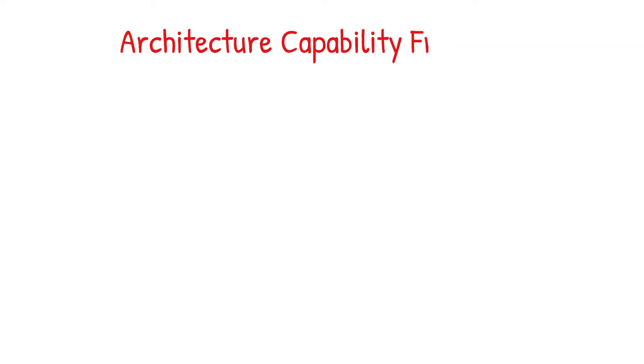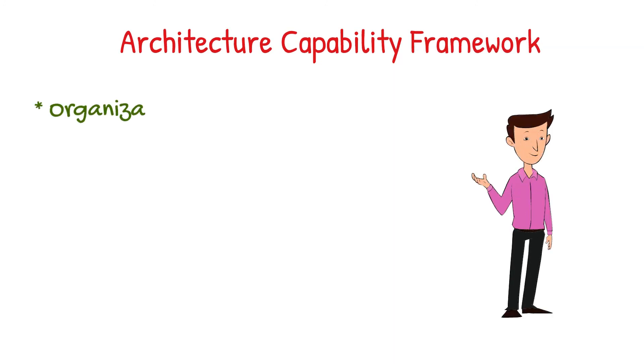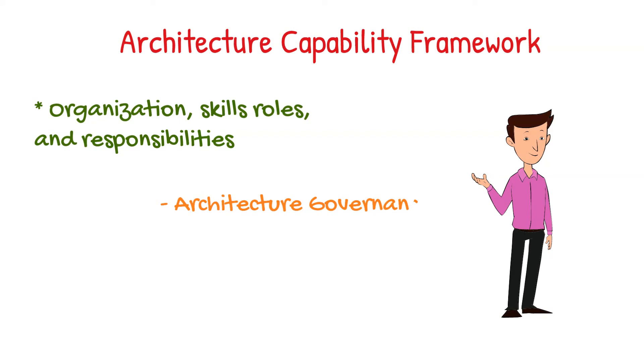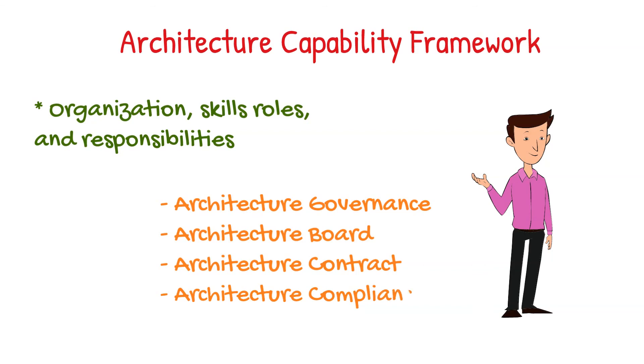The architecture capability framework defines the organization, the skills, the roles, and the responsibilities required to implement TOGAF or to implement an architecture. Typically the concepts that we look at there are the architecture governance, the architecture board, which is one of the highest bodies that determine how we progress with our architecture work, architecture contracts, and the architecture compliance.